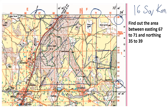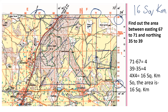But you know that in toposheet you cannot write out all that counting. So there is an even easier way. What we do is: 71 minus 67 equals 4, and 39 minus 35 equals 4. So 4 into 4 is 16 square kilometers. That is the area.